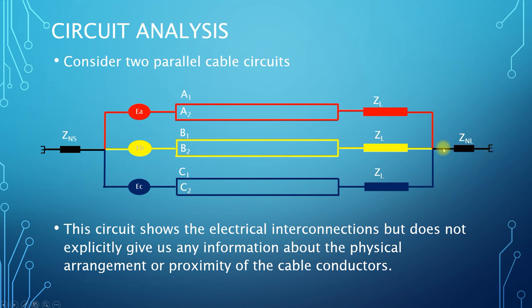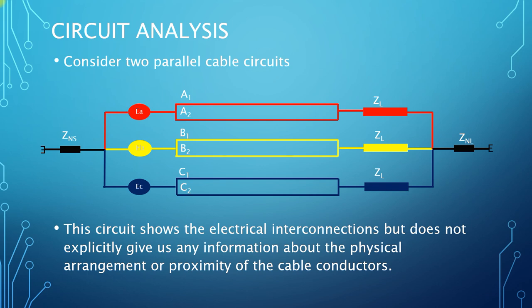The star point of the load impedance may be directly connected to earth, or there may be a neutral earthing impedance in the star point. The currents into the circuit are driven by the three-phase EMFs, which are star connected, and again we may have a neutral impedance at the star point of the source EMF. Now this circuit shows us the electrical interconnections, but it does not explicitly give us any information about the physical arrangement or proximity of the cable conductors.